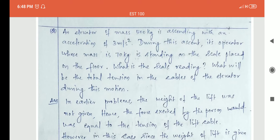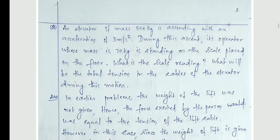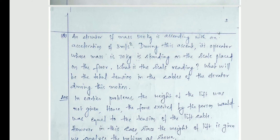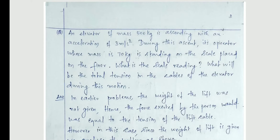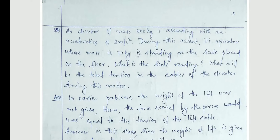An elevator of mass 500 kilogram is ascending with an acceleration of 3 meter per second square. The elevator mass is 500 kilogram and it is ascending, meaning moving upwards with an acceleration of 3 meter per second square. During this ascent, its operator whose mass is 70 kilogram is standing on a scale placed on the floor. So what is the weight shown in the scale reading and what will be the total tension?